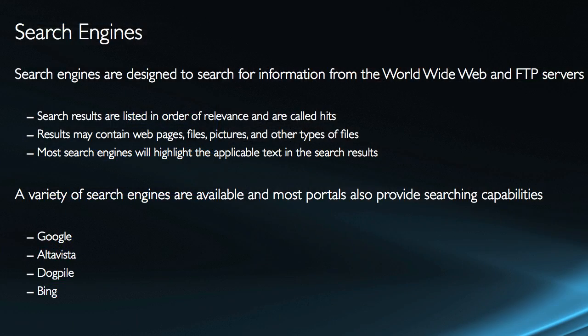The next type of site we want to look at is a search engine. Search engines are designed to search for information across the World Wide Web and FTP servers. When I use a search engine to execute a search, it's going to list my results in the order of relevance, and these results are called hits — so I did a Google search and got a hundred thousand hits.